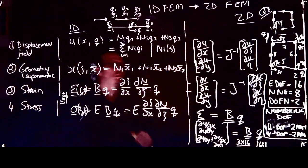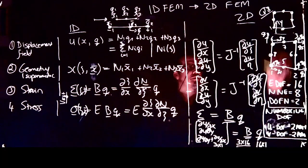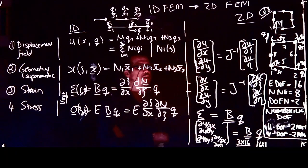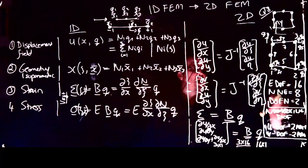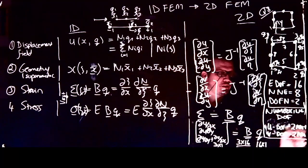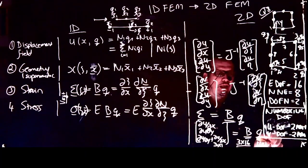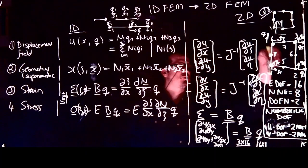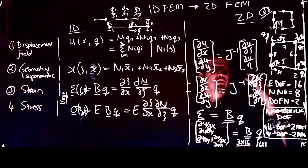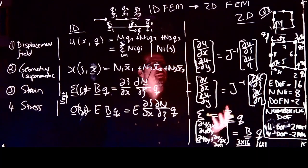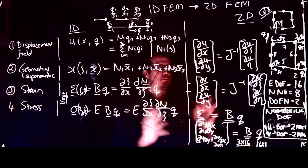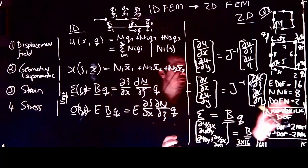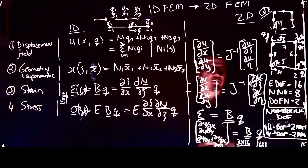If I want to put all horizontal and vertical degrees of freedom in a single vector, I choose the strategy: node number times 2 minus 1 gives the horizontal DOF — all the odd ones — and two times the node number gives the vertical DOF — all the even ones. This gives a consistent scheme. For any 2D element with 14 nodes, you'd immediately know it has 28 degrees of freedom.